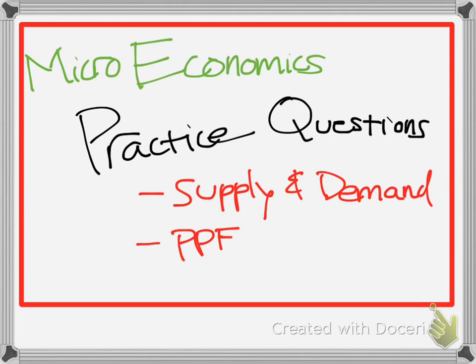Hello, YouTube. Today we're going to do some microecon, and we're going to do a bit of practice problems. Just a simple supply and demand, quick practice problem. It shouldn't be too long. And then we're going to go into a PPF example, Production Possibility Frontier. So let's get started.